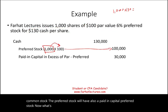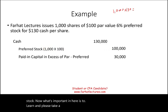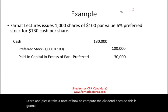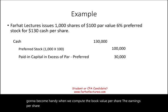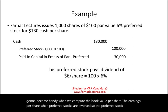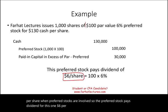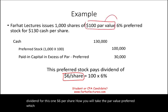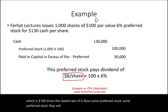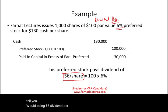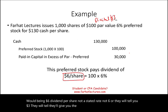What's important here is learning how to compute the dividend, because this will come up when we compute book value per share and earnings per share involving preferred stocks. The preferred stock pays a dividend of $6 per share — you take the par value of $100 times the stated rate of 6%. Note that some preferred stocks will simply give you the dividend amount directly, such as $6 or $3 per share, rather than stating a rate.